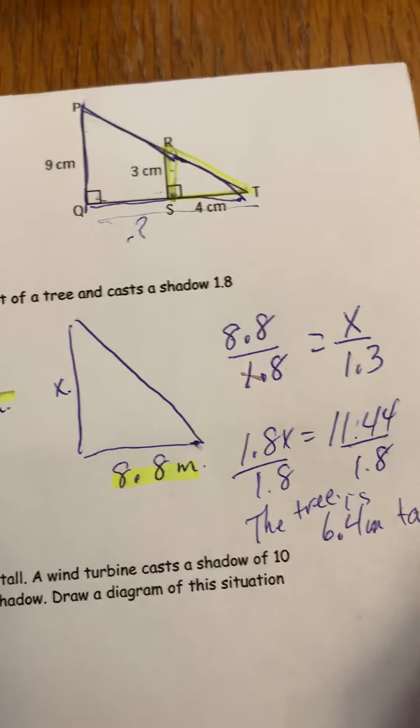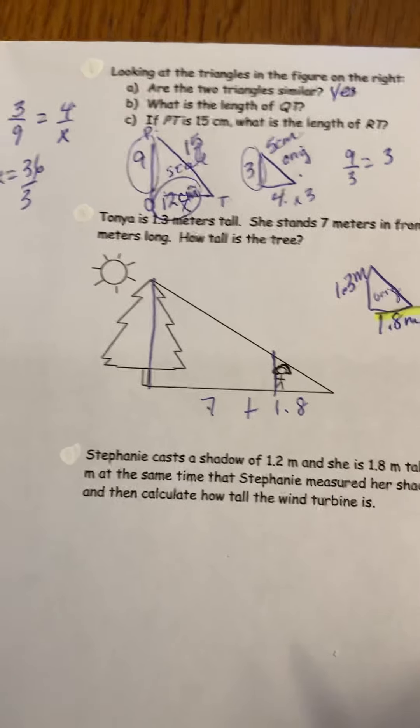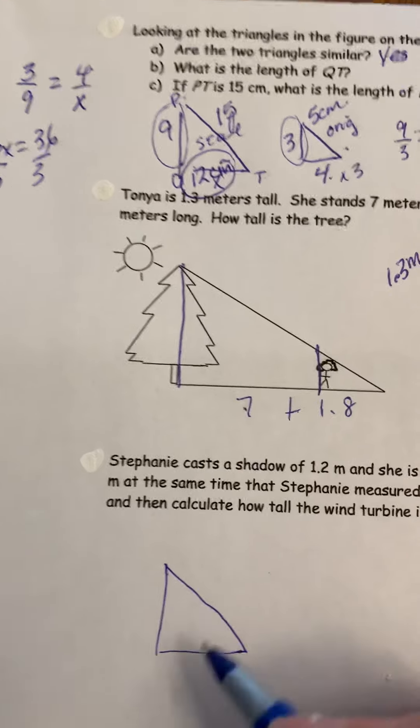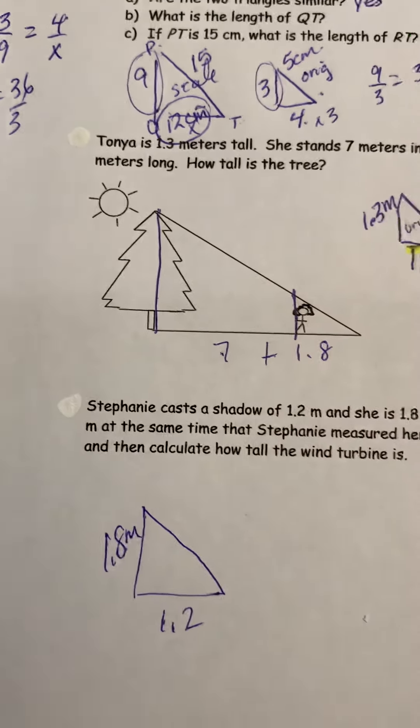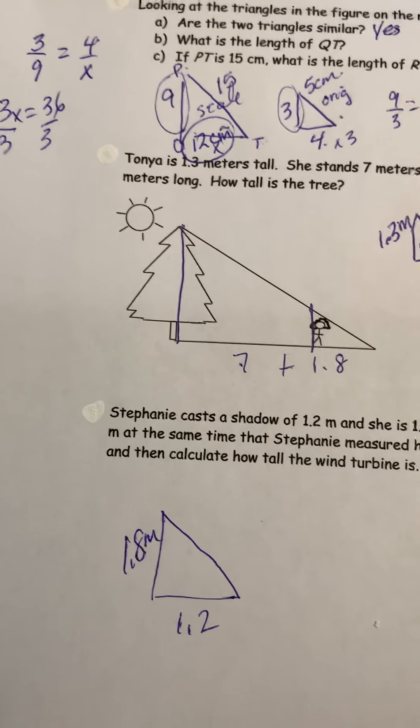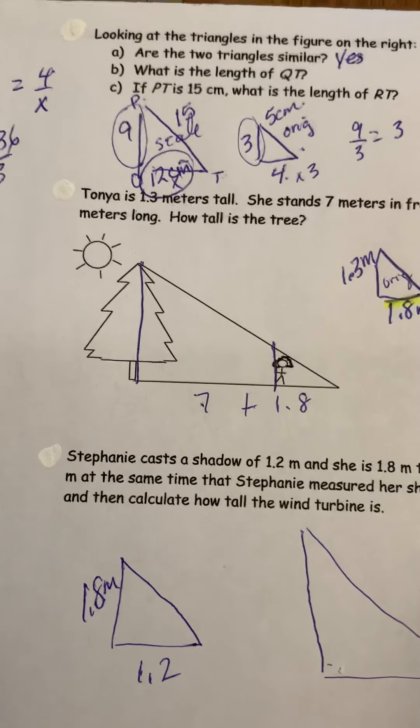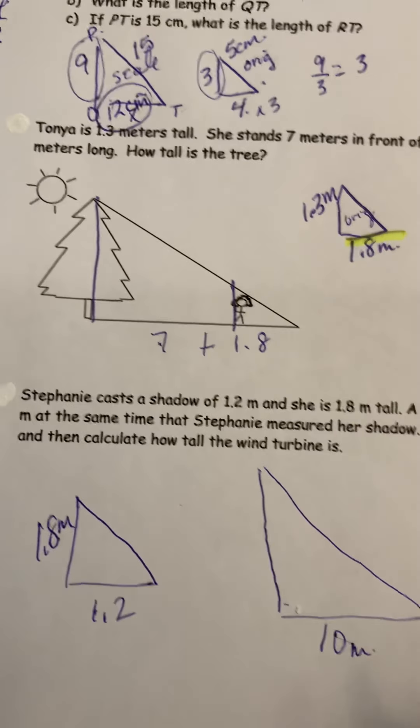Okay, and remember shadows are always going to be on the ground. So let's draw: Stephanie cast the shadow of one and two tenths of a meter, she is one and eight tenths of a meter tall, so there's my triangle. We have a wind turbine that's obviously going to be much larger, and we're not drawing this to scale even though this is scale unit, cast the shadow of 10 meters at the same time that Stephanie measured her shadow.